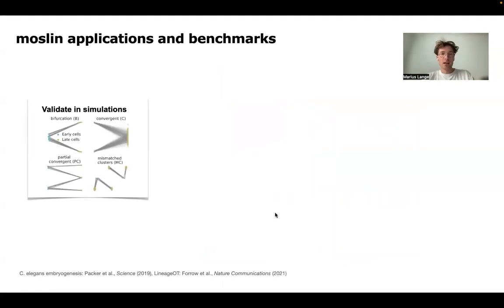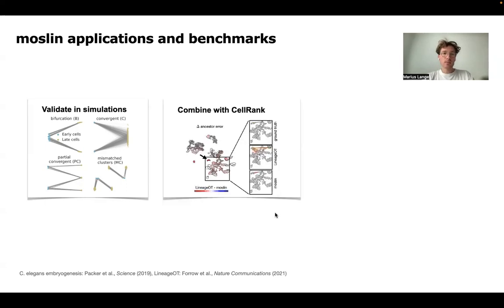We applied this across a few different settings, started in simulations and validated that Moslin is really able to recover the ground truth that is known in these simulations more accurately compared to earlier algorithms that either just use gene expression information or that use gene expression and lineage information. We then go one step further and apply Moslin to C. elegans embryogenesis data. We combine it with CellRank to compute fate probabilities in the system, as well as showing that we can recover known driver genes for certain fate decisions and also predict new ones.